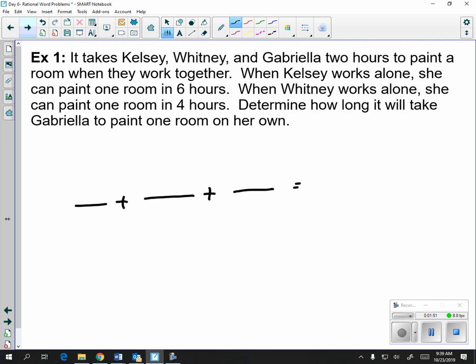So it takes the three of them two hours to paint a room when they work together. So that word together means that all of my twos should go in the numerator. When Kelsey works alone, she can paint one room in six hours. When Whitney works alone, she can paint one room in four hours.